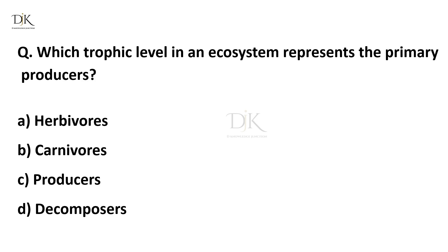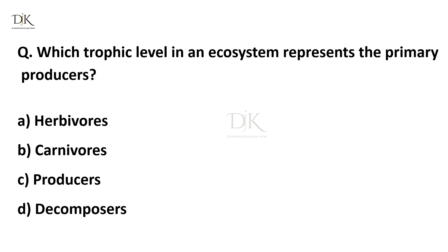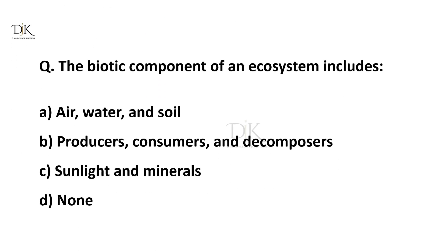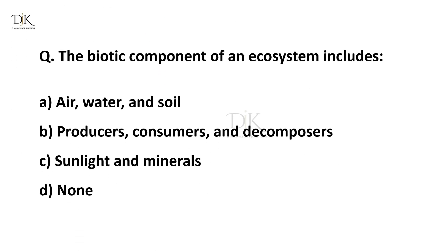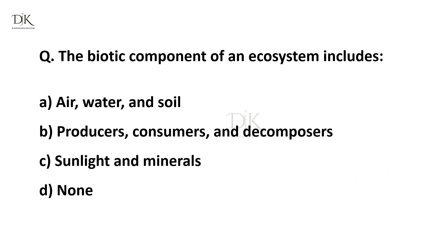Which trophic level in an ecosystem represents the primary producers? Right answer is Producers, Consumers and Decomposers.